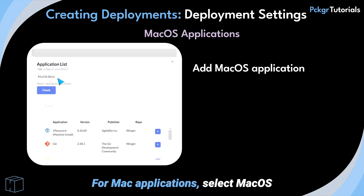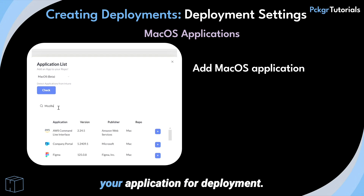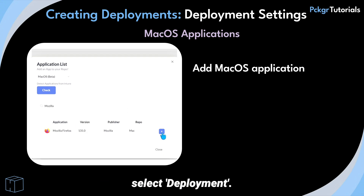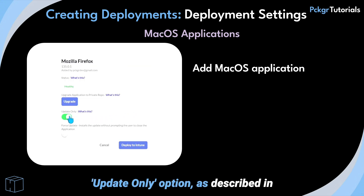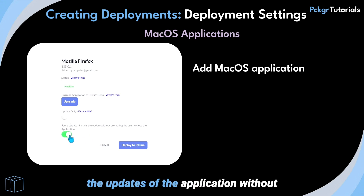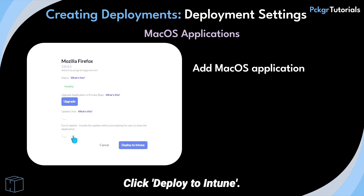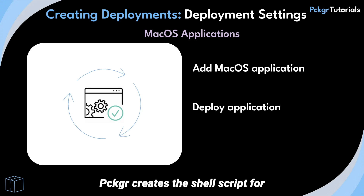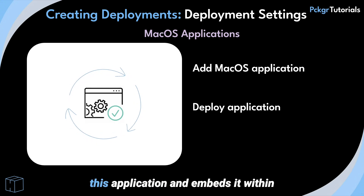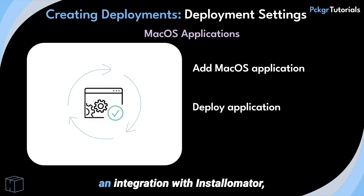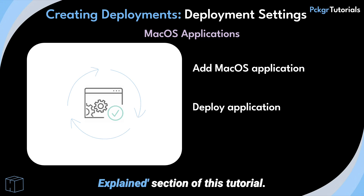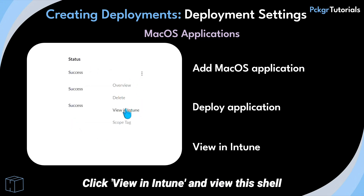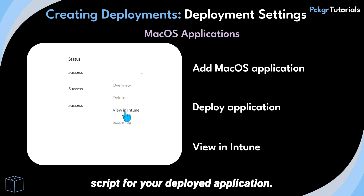For Mac applications, select Mac OS in the drop-down menu and select your application for deployment. Click the three dots and select Deployment. The deployment settings allow an Update Only option, as described in the deployment settings for Winget applications, and an option to force the updates of the application without prompting the user to close the app. Click Deploy to Intune. Packager creates the shell script for this application and embeds it within your Intune environment through an integration with Installomator.